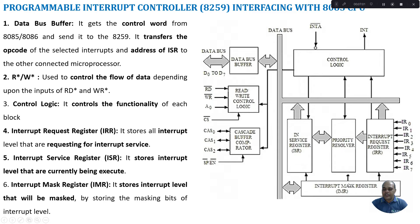The Interrupt Mask Register is used for masking a particular interrupt — we can stop or filter out an interrupt from reaching the CPU. It is an 8-bit register. The In-Service Register (ISR) holds information about which interrupt is currently being serviced by the CPU — it is also an 8-bit register. The priority resolver makes use of all three registers — the ISR, IRR, and IMR — to identify the interrupt to be serviced by the CPU.